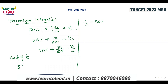It denotes multiplication. One by two into one by two is one by four. So one by four — what is half of 50%? Half of 50 is 25%, which equals one by four.